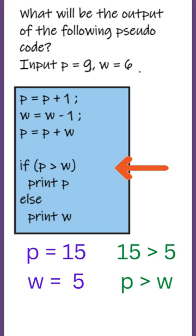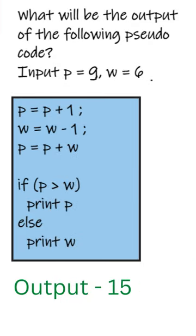Then we will have to check if p is greater than w. p contains 15 and w contains 5. So 15 is greater than 5, which means p is greater than w. So this condition will be evaluated to true and we will print p. Since p contains 15, the output will be 15.